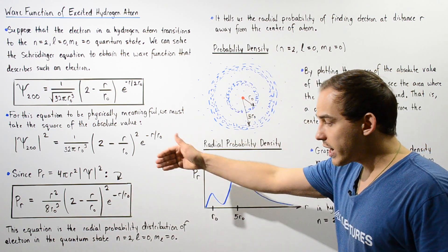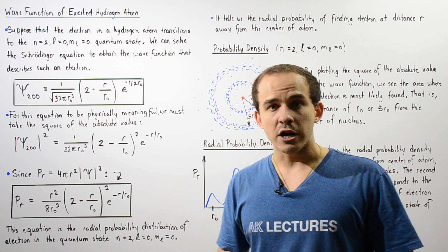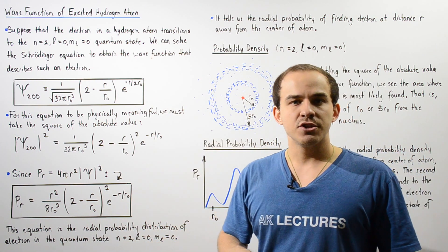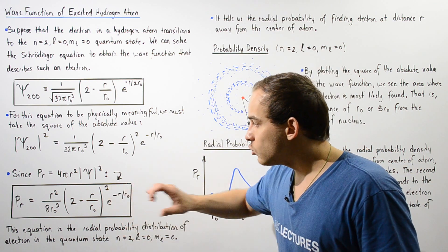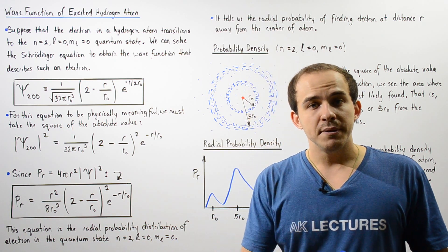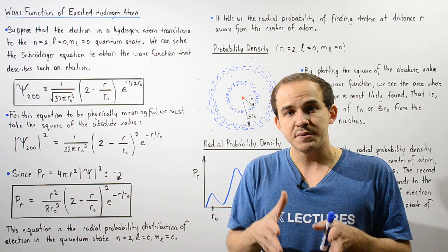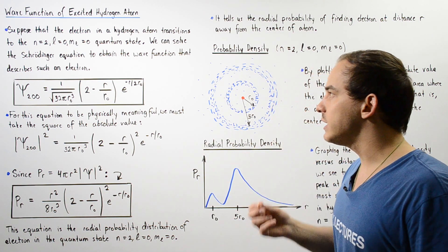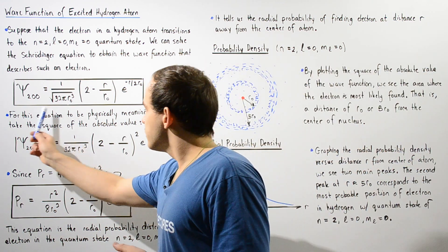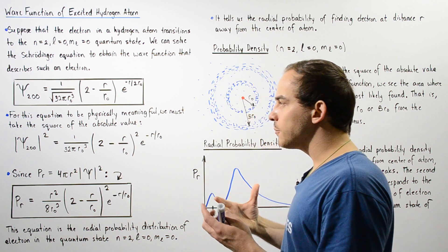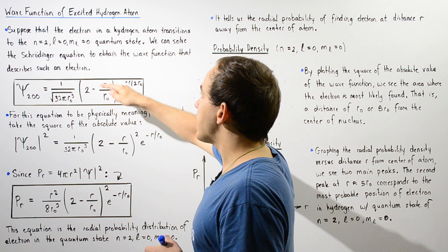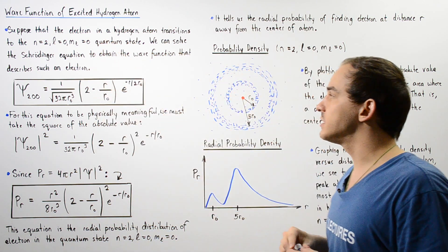This equation is the radial probability distribution of the electron found in the excited quantum state given by these three quantum numbers. It is very useful because it tells us the probability of finding our electron within some specific region around the nucleus of the hydrogen atom. Let's use this probability density to determine the shape and size of the electron cloud produced by this electron within this quantum state.